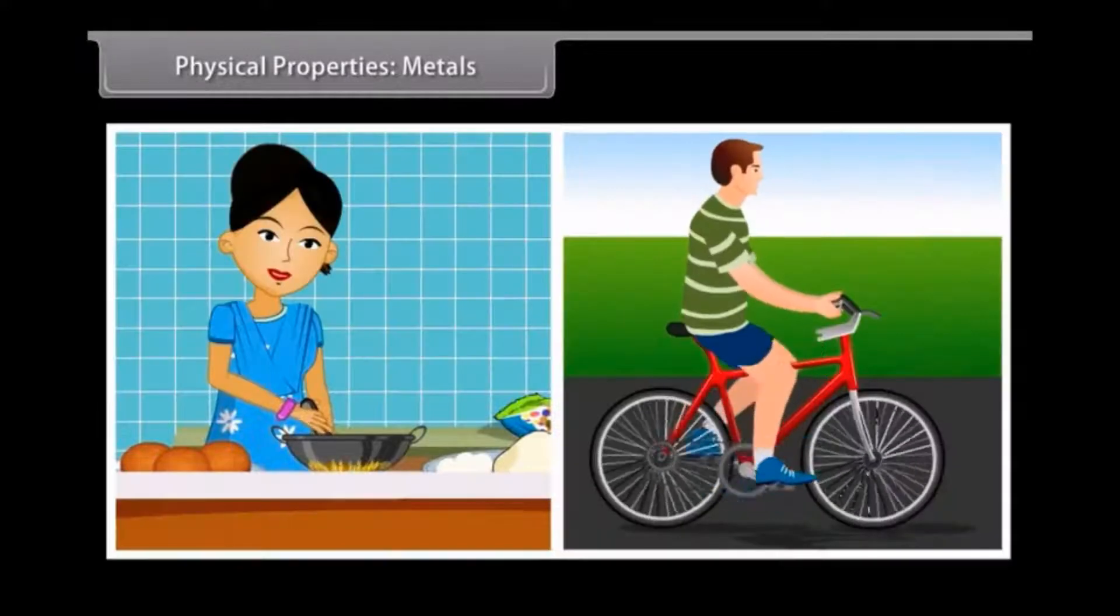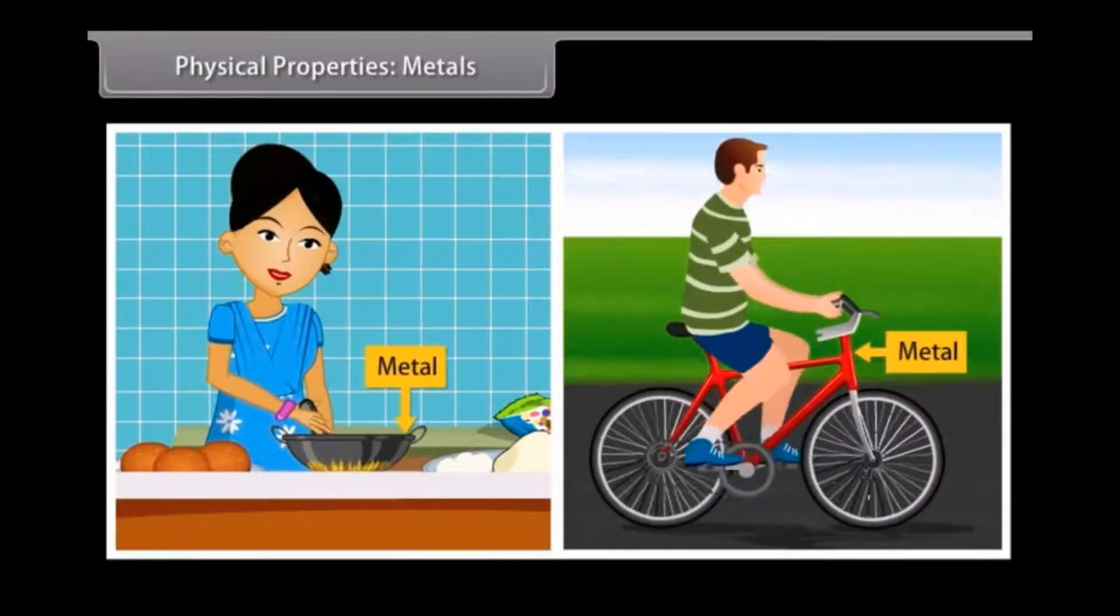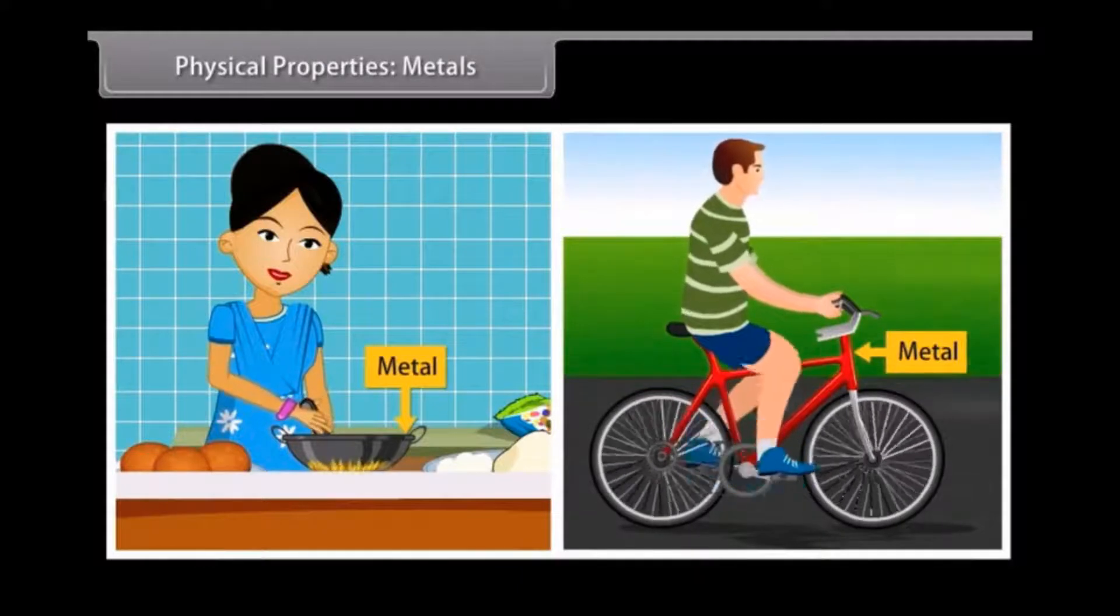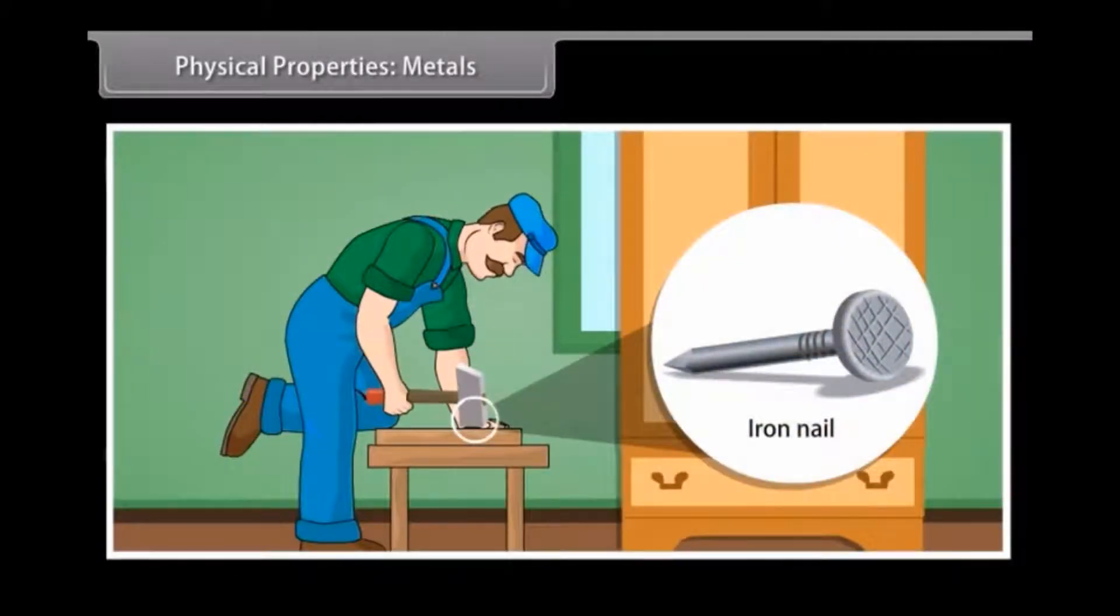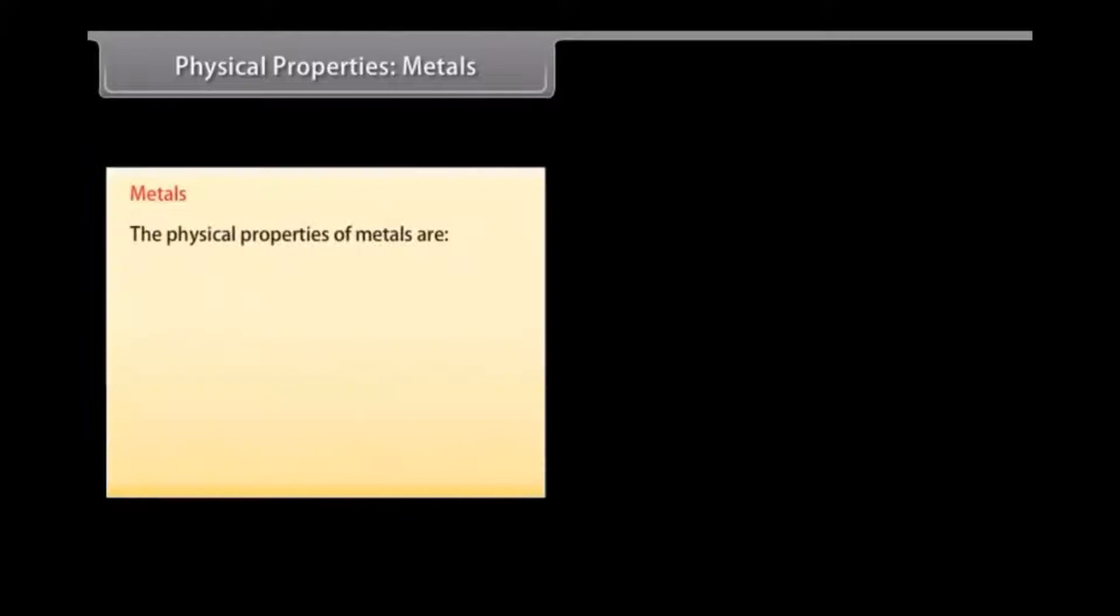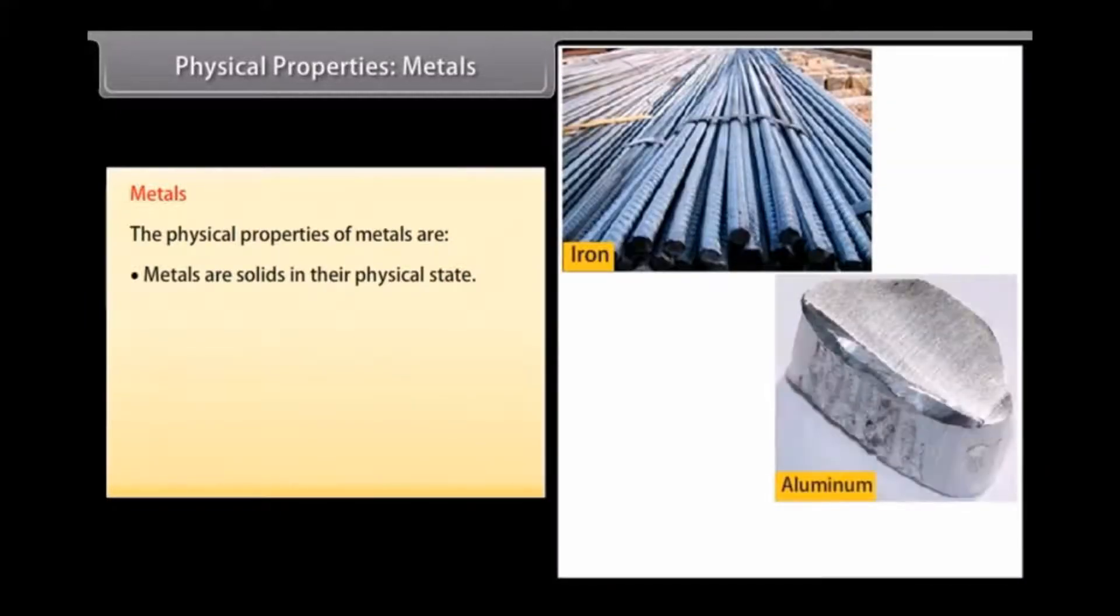Physical properties: Metals. You come across a lot of metals and non-metals in your day-to-day life. For example, the hammer that you use to fix nails is a metal. The nail made of iron is also a metal. Let us look at the physical properties of metals. Physical state: Metals are solid at room temperature. For example, iron, aluminium. Only mercury is liquid metal.